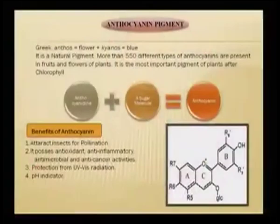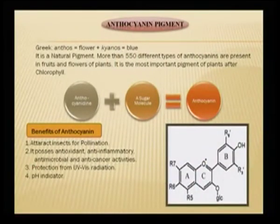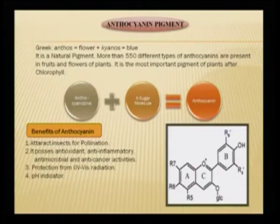Because roses are used for offering to gods and goddesses, this flower is abundantly available from temple waste. So it can be a real good source of natural dye. We will dedicate one more lecture to this anthocyanin pigment and today's focus will be on the rose pigment derived from the rose flower. More than 550 different types of anthocyanins are present in fruits and flowers of plants that grow in India. It is the most important pigment of plants after chlorophyll.